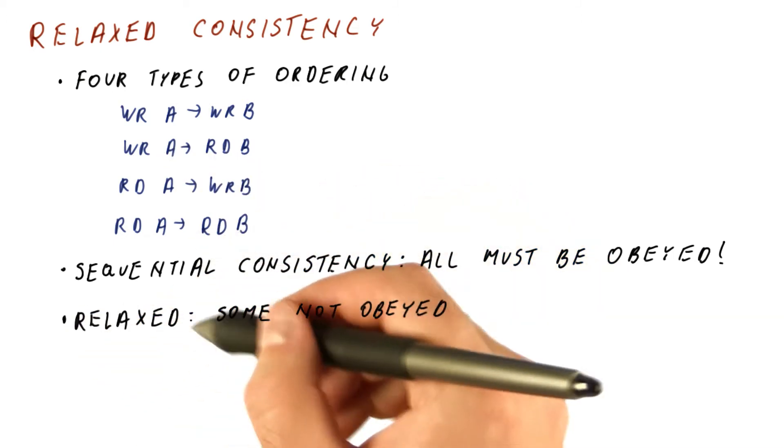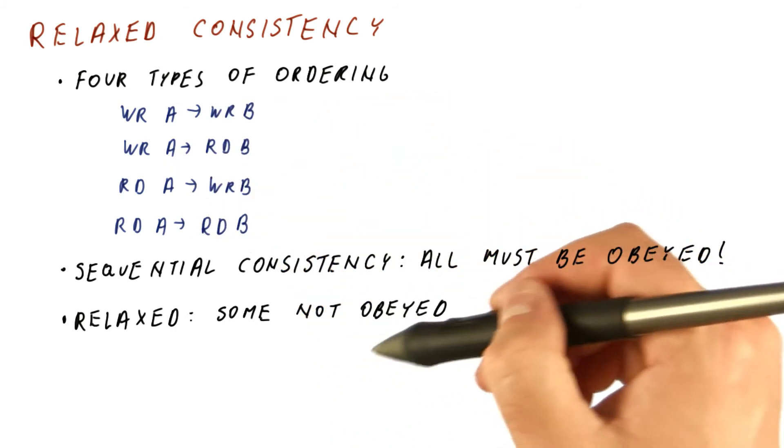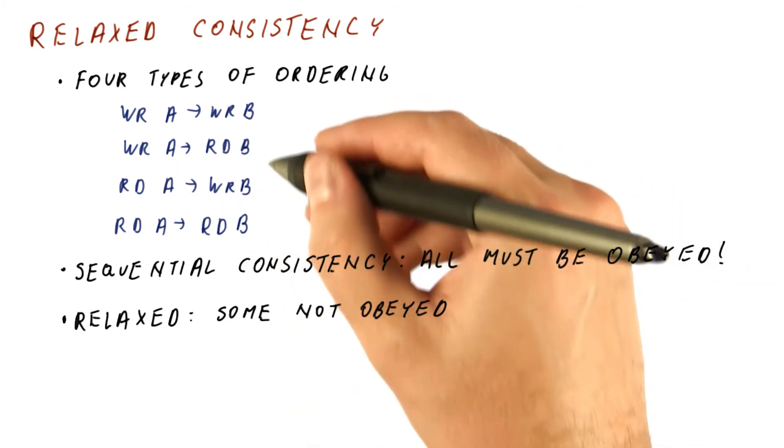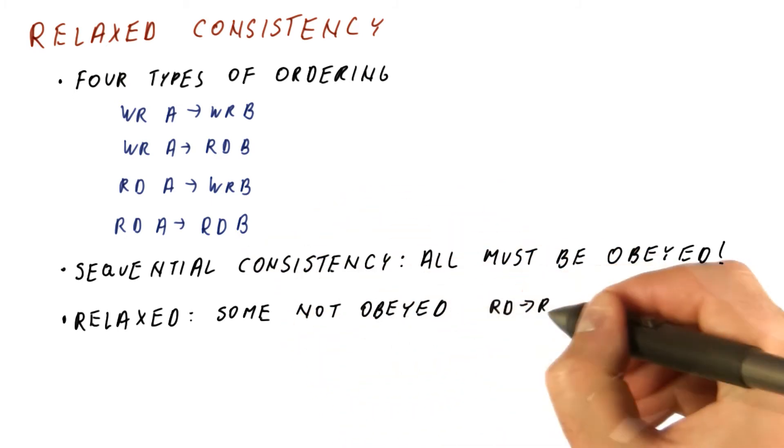In relaxed consistency models, some of these types of ordering need not be obeyed at all times. Usually, the first type of ordering that will not be obeyed is the read-read.